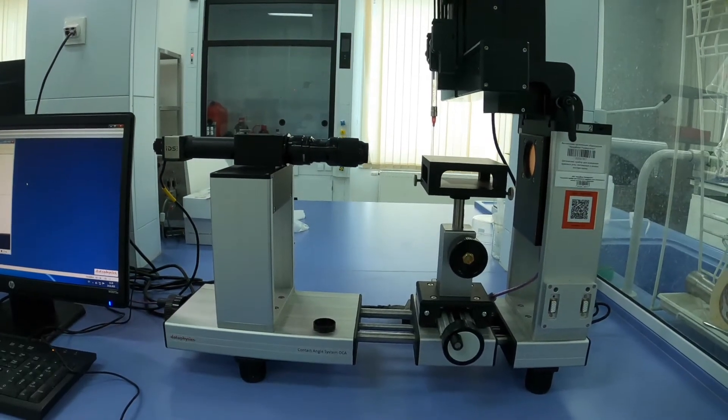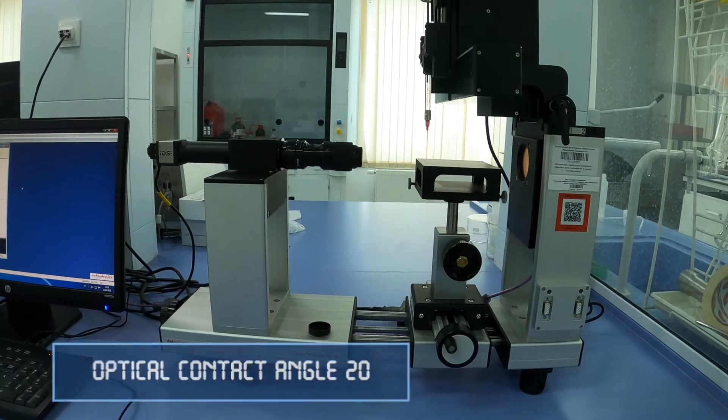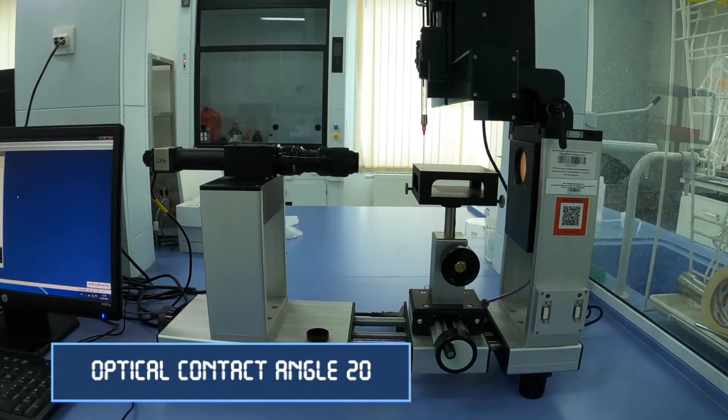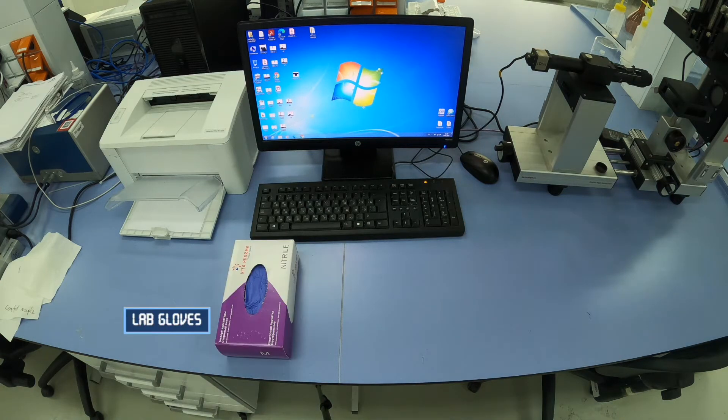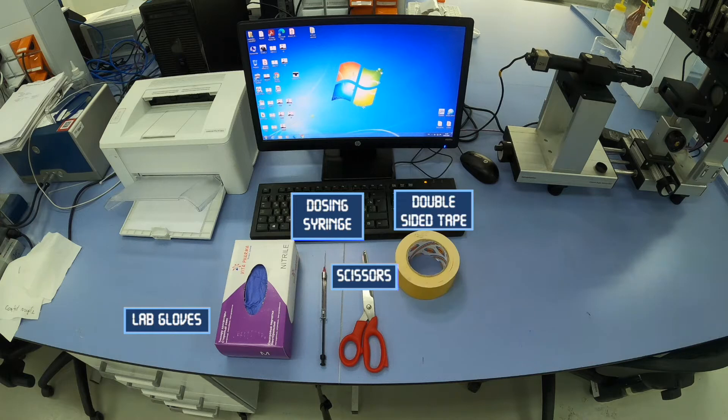This laboratory work will be done with optical contact angle 20 equipment. For this experiment we will need laboratory gloves, dosing syringe, scissors, double-sided tape,